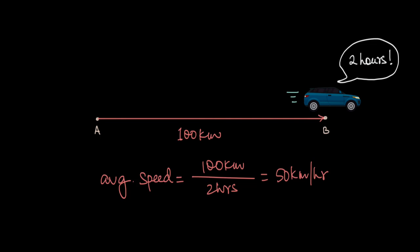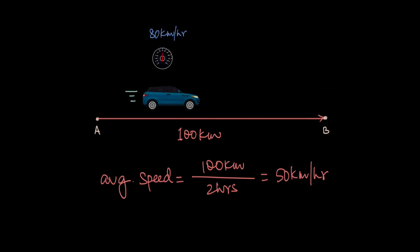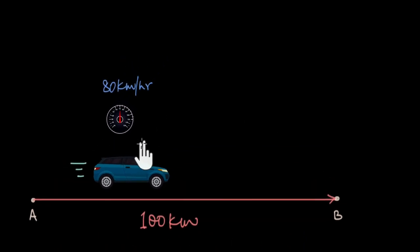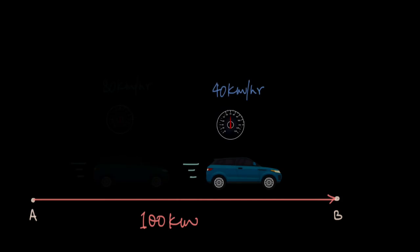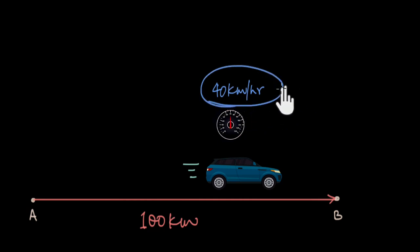Now if you wanted to check your speed at any particular instant, all you need to do is look at the speedometer. Say you are moving at 80 kilometers per hour, and sometime later at 40 kilometers per hour. These speeds shown on the speedometer are your speeds at that instant — they are called your instantaneous speed.